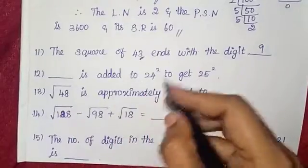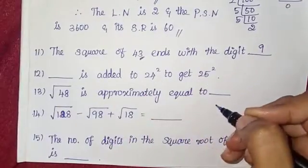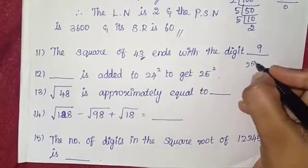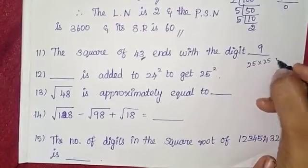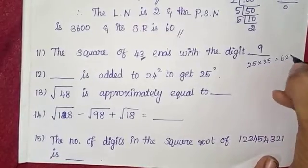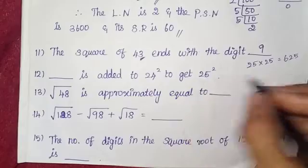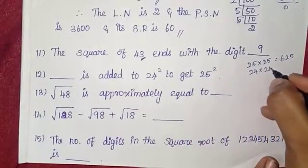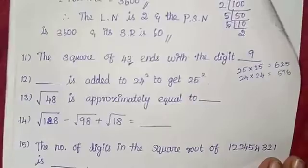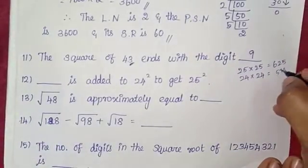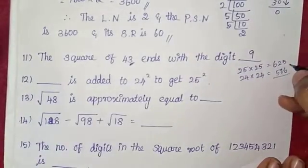What is added to 24 squared to get 25 squared? First, 25 squared is 25 times 25, which equals 625. Then 24 squared is 24 times 24, which equals 576.